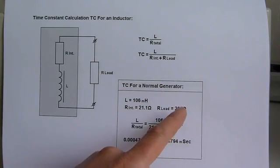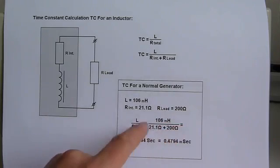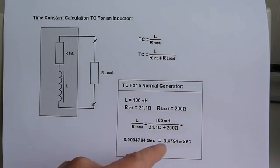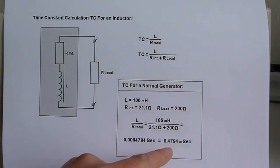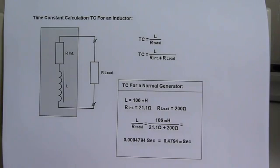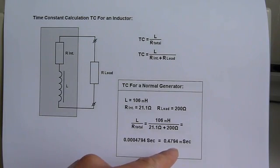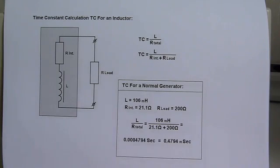When you hook up a 200-ohm load, you can fill in the parameters and see that it will take 0.4794 milliseconds for the generator coil to create its back EMF to 63.2%. This is really fast, and in normal generators it is pretty easy to introduce rotor drag because this value is low.